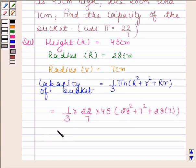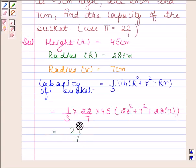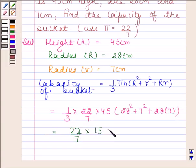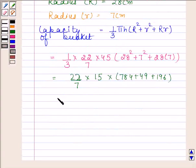This is equal to 22 by 7 into 15 into 1029, and this is equal to